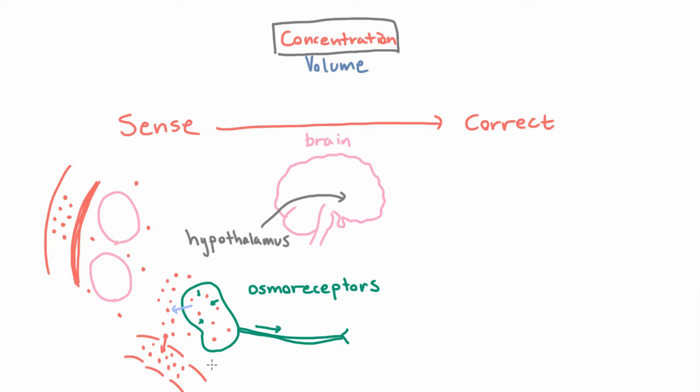So this is how the brain senses changes in concentration. And now how does the body correct those changes? Well, it does so in two ways.